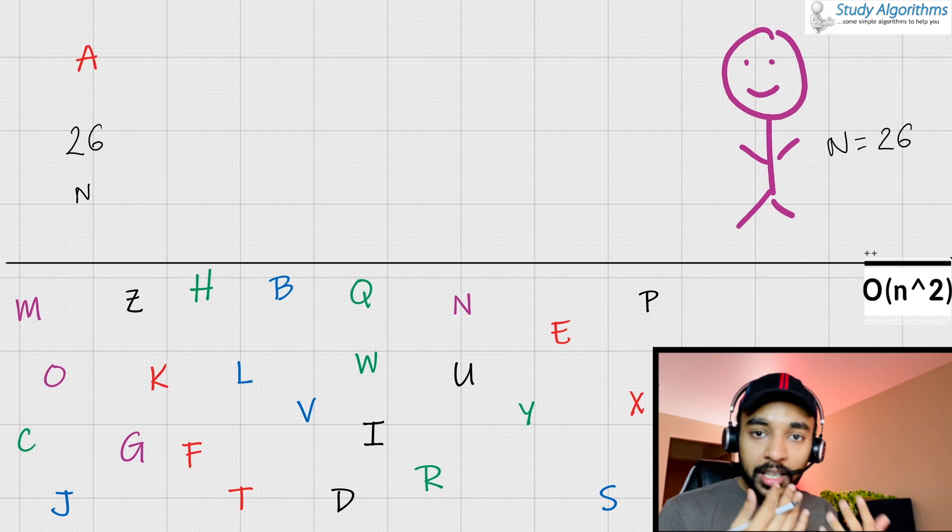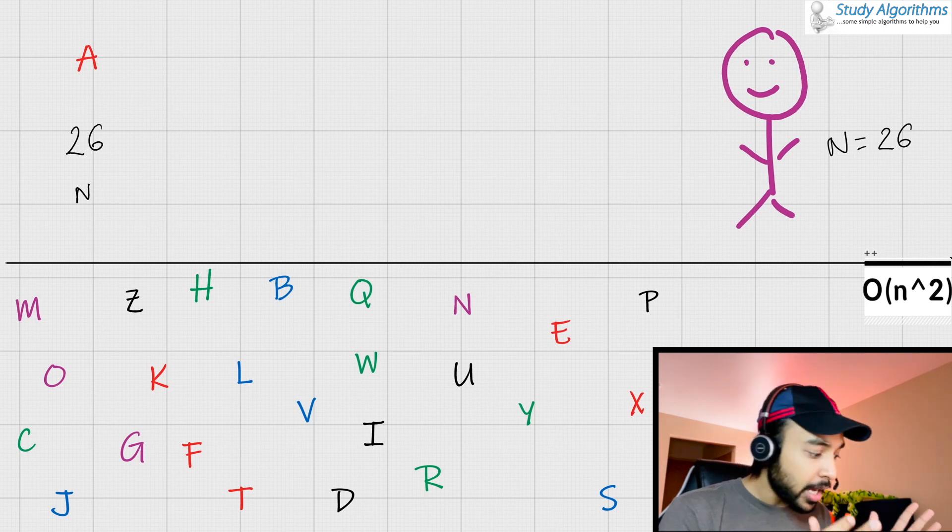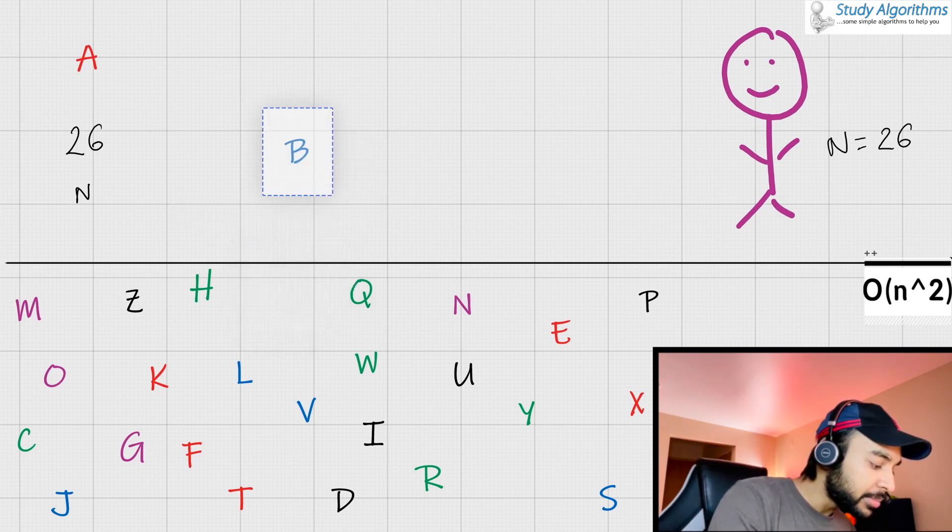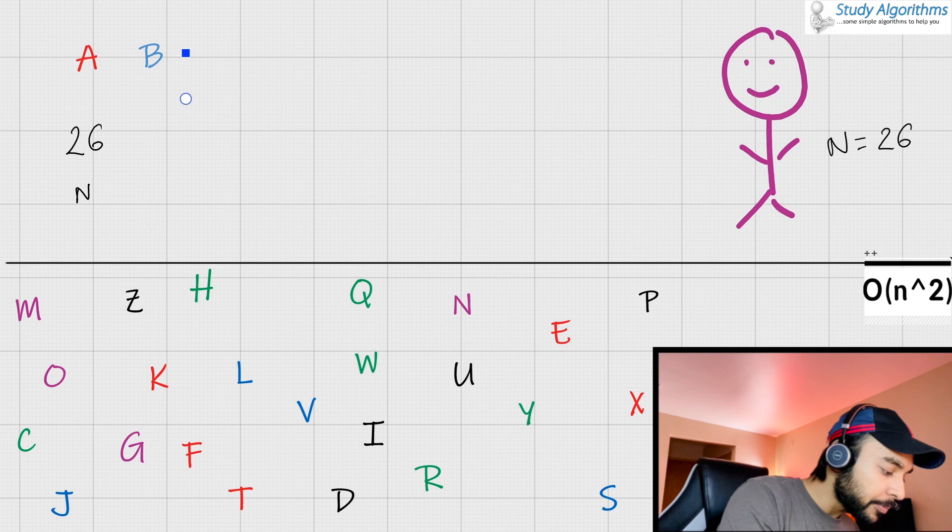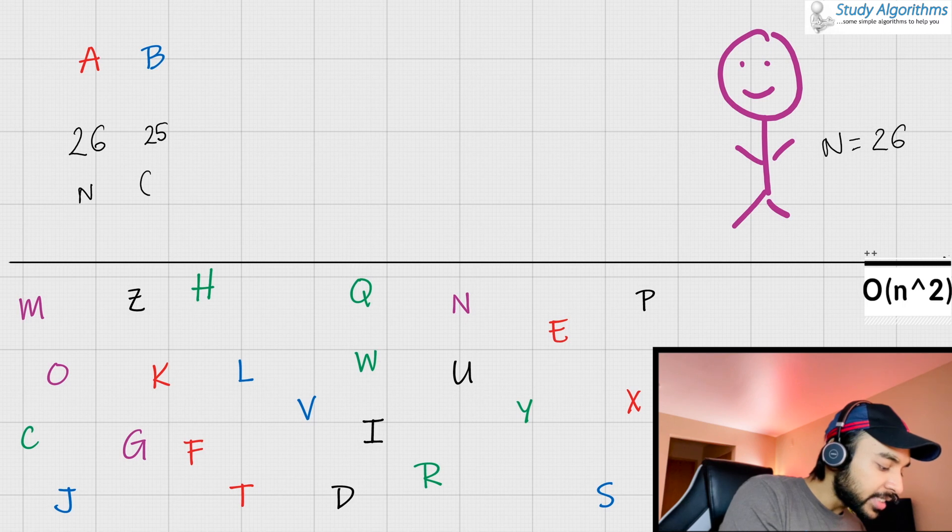Now you would have to find the letter B. Again, in a worst possible scenario, you would be looking throughout the entire list. But this time you have only 25 characters remaining. So you look throughout the list and you find the letter B. You take up this letter and you bring it up to the top. But this time you had to look through 25 characters or I can say N minus 1.